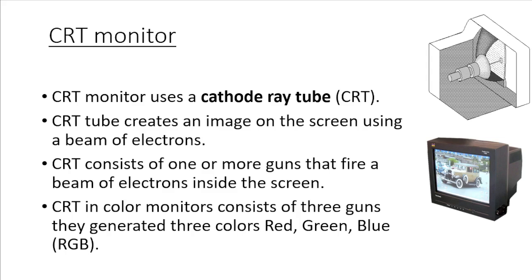First of all we will discuss about CRT monitors. CRT monitors use a cathode ray tube or CRT. The CRT tube creates an image on the screen using a beam of electrons. CRT consists of one or more guns that fire a beam of electrons inside the screen. CRT in color monitors consists of three guns, and these guns generate red, green and blue or RGB colors. The other colors are generated with a combination of these three colors.